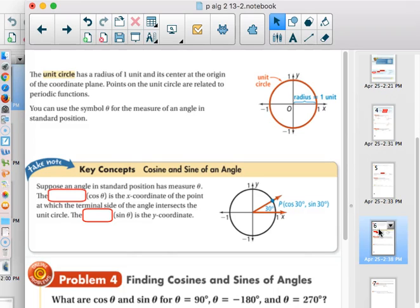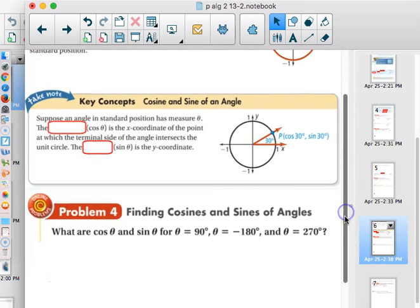We're going to use θ for most of the angles that we talk about. Usually, it's just Greek symbols and we kind of stick with θ in here. And it says cosine and sine of an angle. And this is what I was just explaining to you before. Suppose an angle in standard position has a measure of θ, whatever that is. The cosine of that angle, and we always just use cos for short, is the x coordinate of the point at which the terminal side of the angle intersects the unit circle.